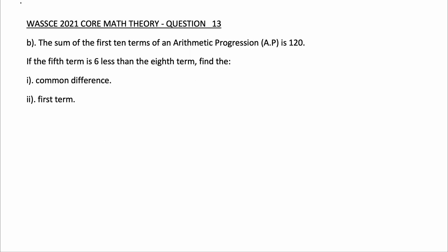For question 13b: The sum of the first 10 terms of an arithmetic progression is 120. If the fifth term is 6 less than the eighth term, find: (i) the common difference; (ii) the first term.